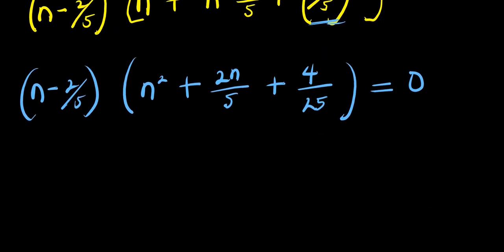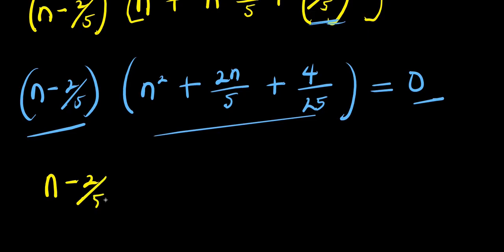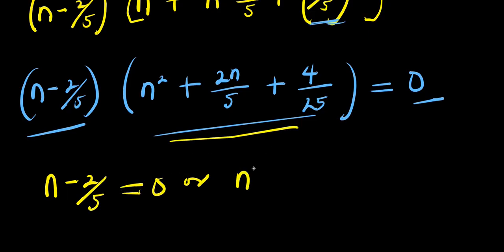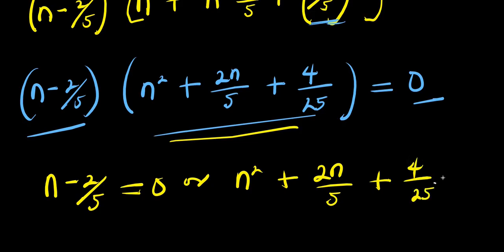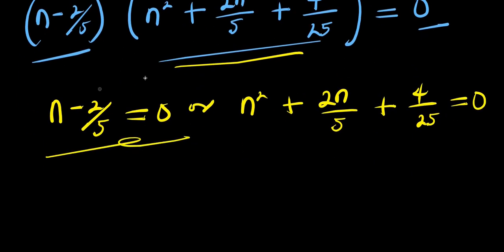So from here, what I can do is equate each factor to 0. I have the first one: n minus 2/5 equals 0, which gives n equals 2/5. This is my n₁.